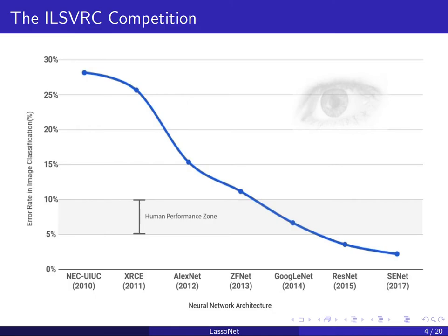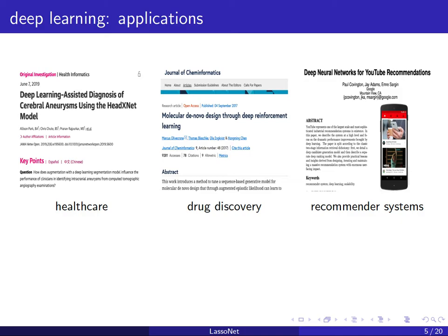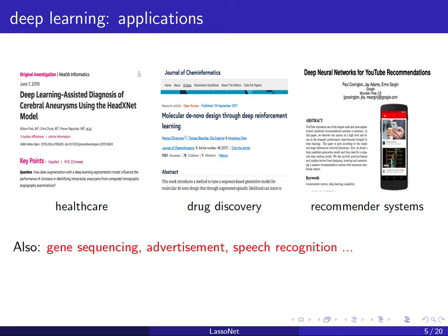Starting from 2012 we've seen a consistent trend where the winner is always based on some neural network technique, and every single year the name of the winner is different, which tells you how much effort has gone into this optimization. It's needless to say how prevalent deep learning is in pretty much every area of modern research and technology — healthcare, drug discovery, recommender systems. No matter the field, the moment you have a data-rich problem, you can think about using a technique like this.